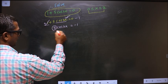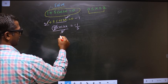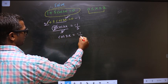Now you should remove 5. To remove 5 you divide by 5. So now we get cos 3x equal to minus 1 by 5.